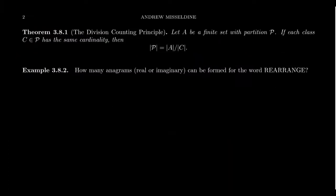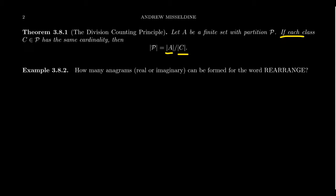This is something important to remember: different fractions can represent the same rational number, so different fractions don't necessarily give different rational numbers. This is the fundamental problem of overcounting — we have to make sure different representatives actually represent different classes. This gets us to the titular topic of this video: the Division Counting Principle. If a finite set A has a partition P where each class has the exact same cardinality, then the cardinality of the partition is simply the cardinality of A divided by the cardinality of a single class.